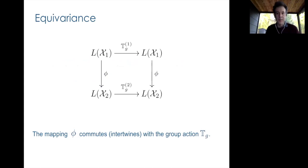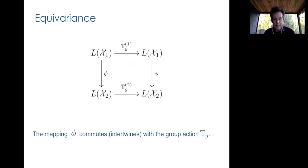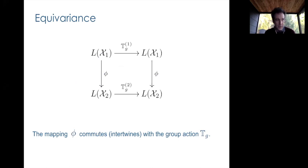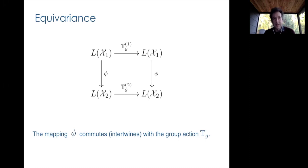I'm going to start like a real mathematician with a commutative diagram explaining the concept of equivariance. Equivariance means you have some object or function which can undergo two types of transformations: one denoted by phi, a mapping from one space to another, and another denoted by T(g), an internal transformation corresponding to the action of a group — in our case, typically a symmetry group like rotations in space or permutations.